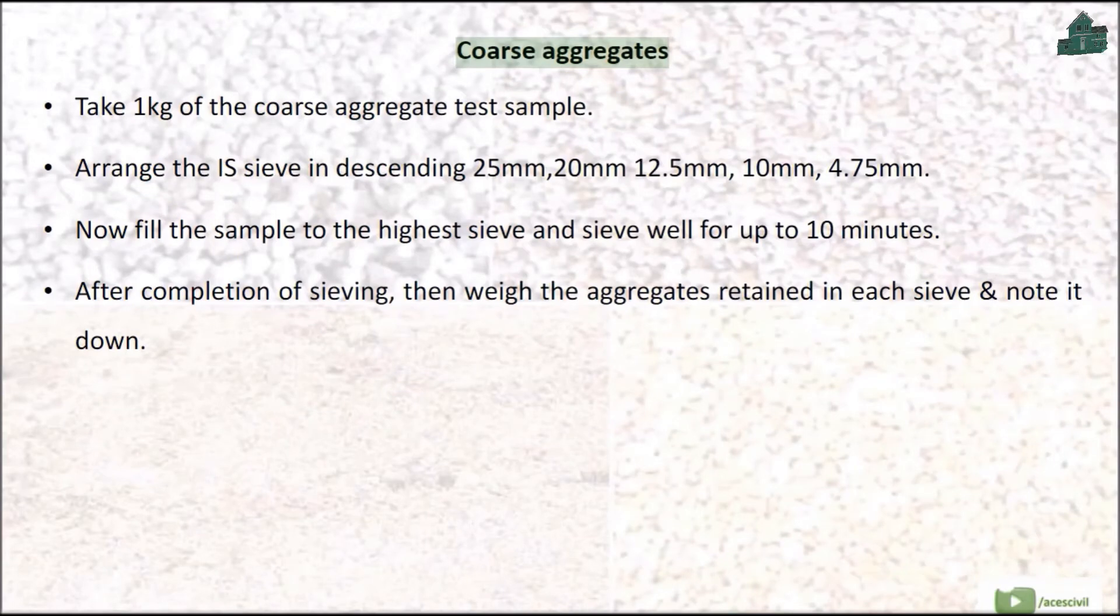Coarse Aggregates: Take 1 kg of the coarse aggregate test sample. Arrange the IS sieve in descending order: 25 mm, 20 mm, 12.5 mm, 10 mm, 4.75 mm.